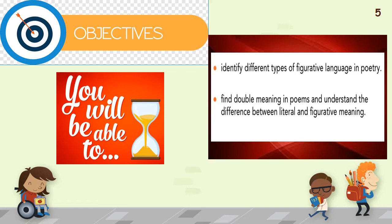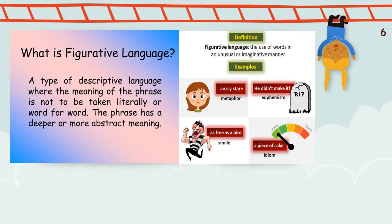Figurative language always adds spice to your language. What is figurative language? It is a type of descriptive language where the meaning of the phrase is not to be taken literally, or word for word. The phrase has a deeper or more abstract meaning — whatever is said is not exactly what is meant. Figurative language is the use of words in an unusual or imaginative manner. Examples include: an icy stare, as free as a bird, he didn't make it, a piece of cake.